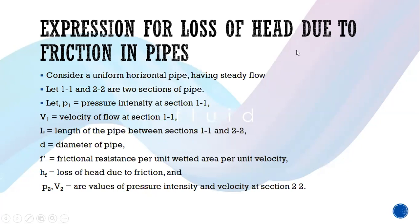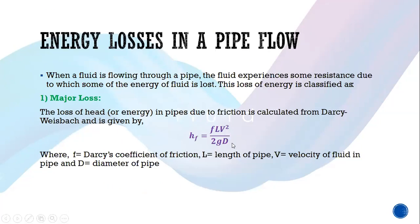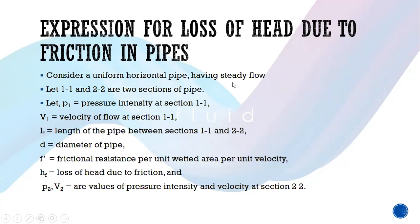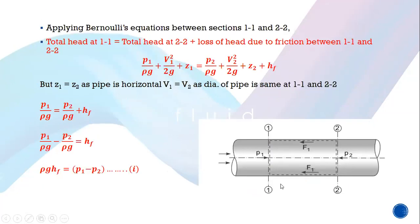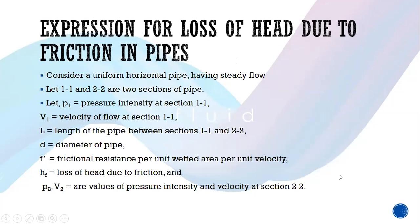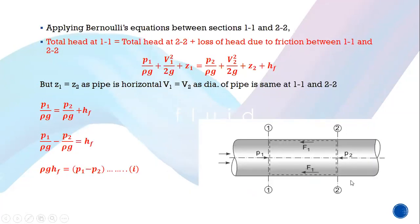Now we derive the expression for loss of head due to friction in a pipe. We are calculating HF = FLV² / 2GD, the expression for friction loss. Consider a pipe section having the same cross section with two sections: 1-1 and 2-2. We need to calculate the loss of head due to friction between these two sections.